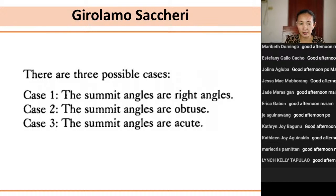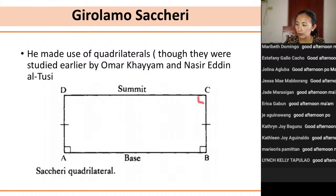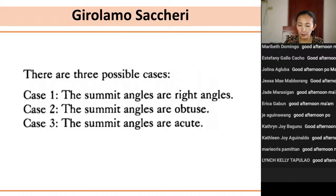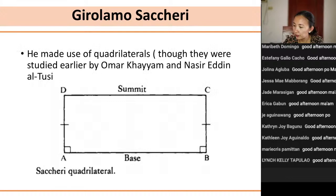There are three possible cases. Case one — that which he wants to prove — the summit angles are right angles. Case two: the summit angles are obtuse angles. Case three: the summit angles are acute. The problem is that he was able to prove some of the cases but not the third case, no matter how hard he tried. He tried for quite a long time — notice that his work was published just before his death.